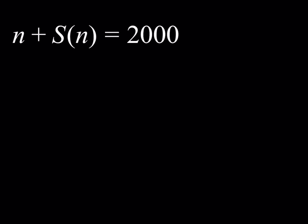n plus S(n) is equal to 2000, and we're going to be looking for the values of n. So first of all, let's notice that n is a four-digit number. Why? Because if it's not, then the sum n plus S(n) cannot be 2000.